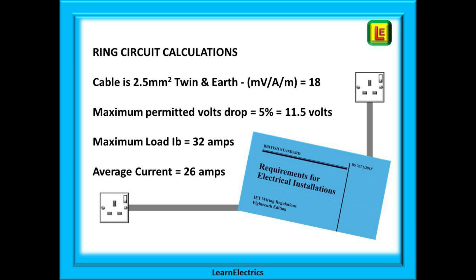The regulations also tell us that the maximum permitted volts drop for this type of circuit is five percent of 230 volts, which is 11.5 volts. Any volts drop above 11.5 volts may start to affect the efficiency and performance of appliances that are connected to it, and the cables may also begin to overheat. Our maximum load is 32 amps and our average load is 26 amps.